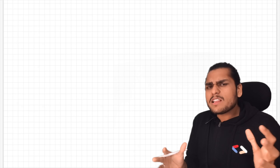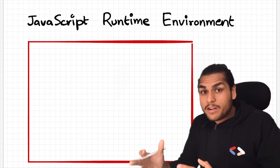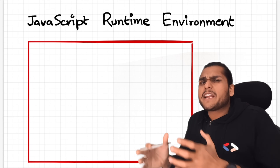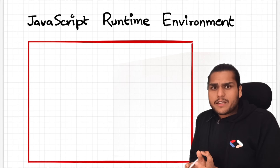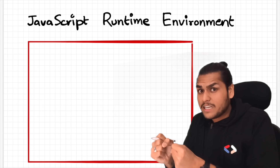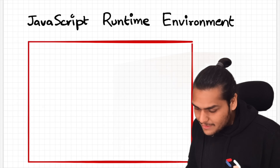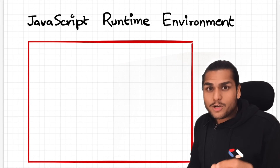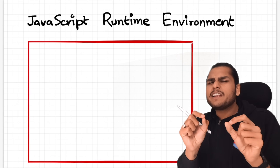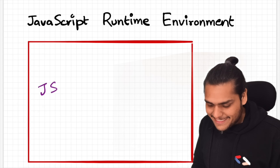And you know how all that is possible? It's all possible because of the JavaScript runtime environment. The JavaScript runtime environment is like a big container which has all the things required to run JavaScript code. To run any piece of JavaScript code, you definitely need a JavaScript engine, so it has a JS engine.